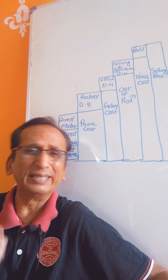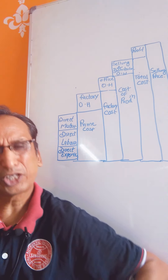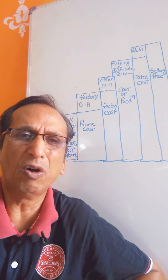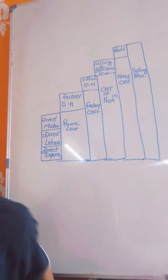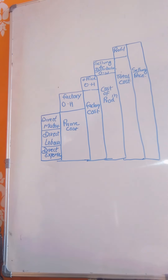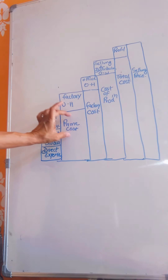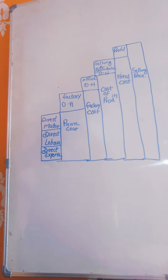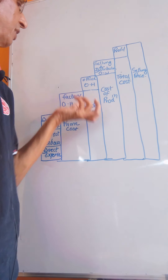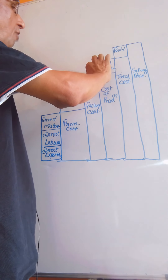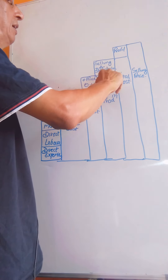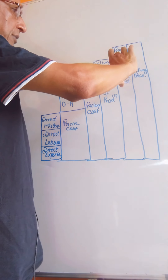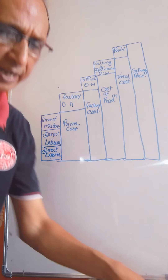Now our main focus is how to find the cost. The determination of cost can be explained in a simple figure. All direct material, direct labour, and direct expenses together are called prime cost. Prime cost plus factory overhead gives you the factory cost. Factory cost plus office overhead gives you the cost of production. Cost of production plus selling and distribution overhead gives the total cost. Total cost plus profit equals the selling price.